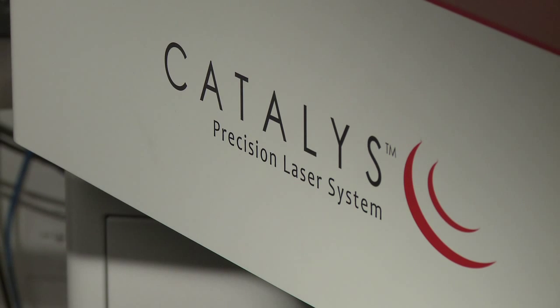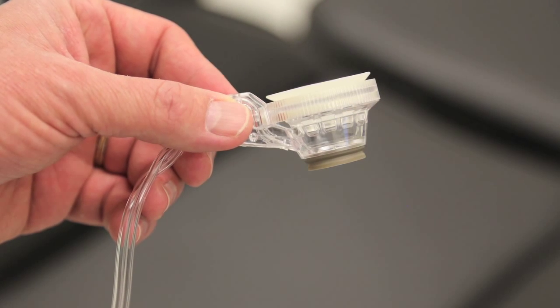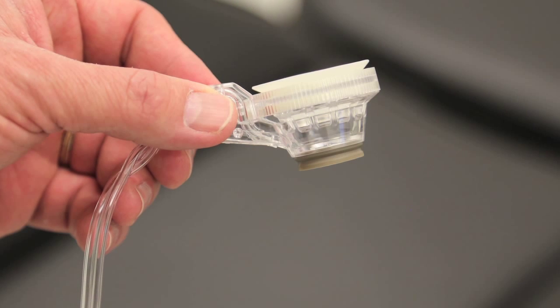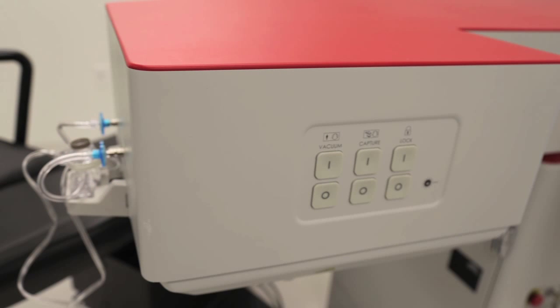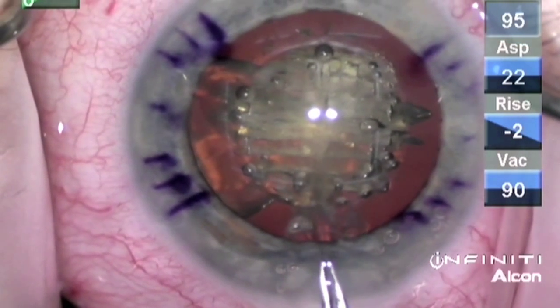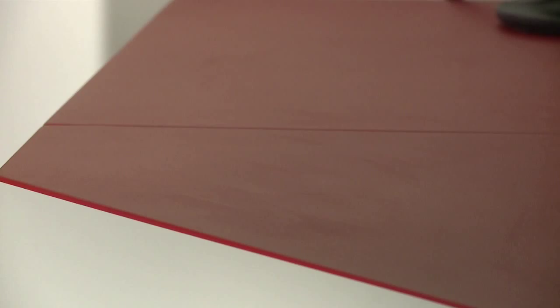This is actually the second laser system we acquired, the Optometica Catalyst. Rather than applanate the cornea, a liquid optic interface is used to couple the laser to the patient's eye, leaving the cornea untouched and therefore undistorted. We've observed complete circular free-floating capsulotomies are the norm with this system. The ease of lifting these capsulotomies in contrast to the postage stamp is similar to the ease of simply lifting a napkin off a table, hence the term napkin capsulotomy.